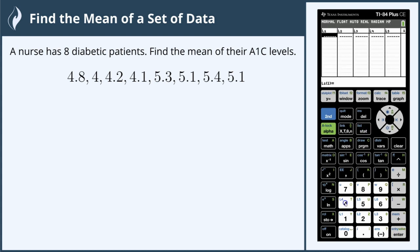We have 4.8, 4, 4.2, 4.1, 5.3, 5.1, 5.4, and 5.1. So that is eight values and we want to find the mean, so we go to stat.